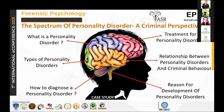Cluster C personality disorders are about the anxious type, characterized by anxious and fearful thinking. The first is avoidant personality disorder, where individuals are too sensitive to criticism and rejection, have a fear of disapproval and embarrassment, and are socially inhibited, timid, and isolated. The second is dependent personality disorder, in which they are excessively dependent on others, fear having to provide self-care, have difficulty disagreeing with others, and feel an urgent need to start a new relationship when a close one ends.